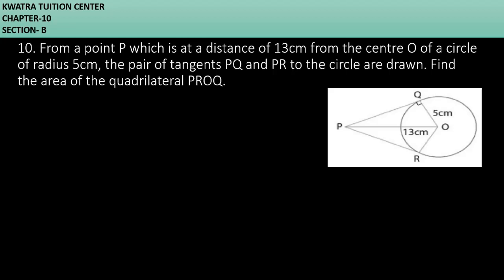Let's start with question number 10. It says from a point P which is at a distance of 13 cm from the center O of a circle of radius 5 cm, the pair of tangents PQ and PR to the circle are drawn. Find the area of the quadrilateral PROQ.